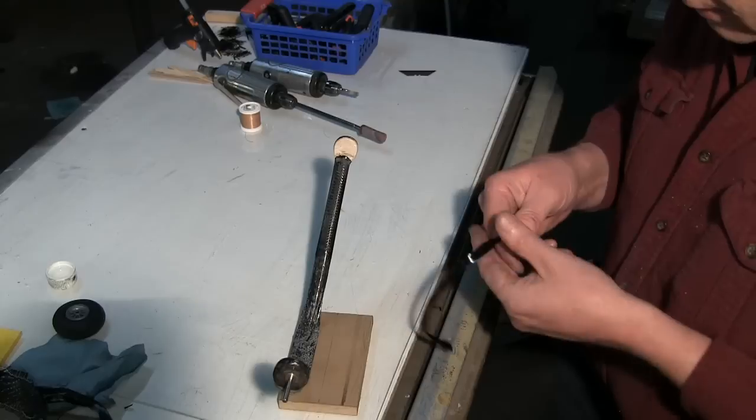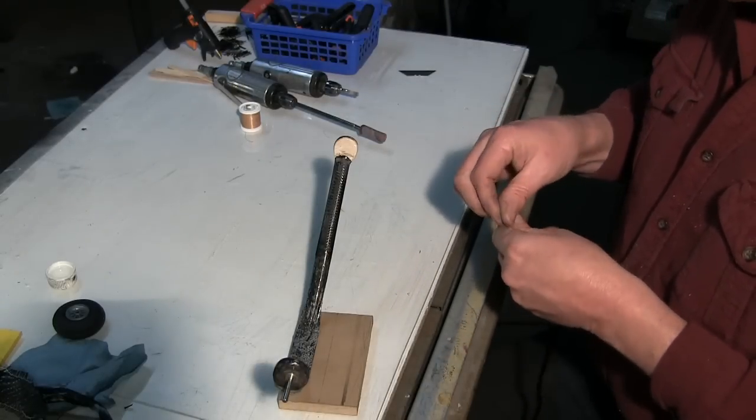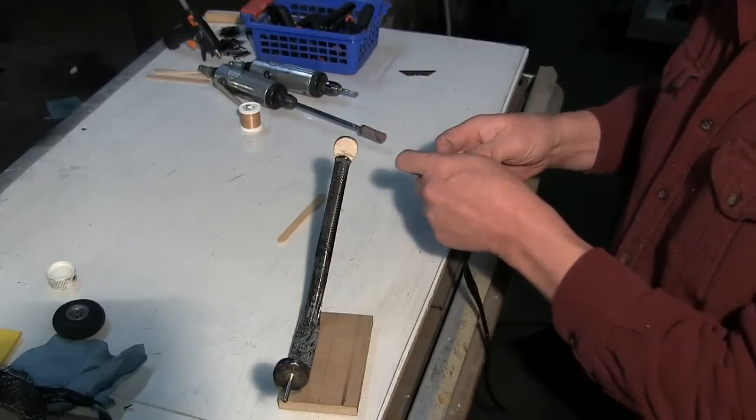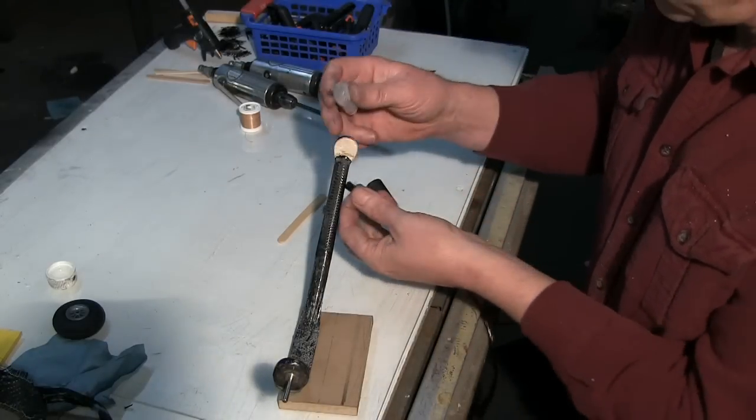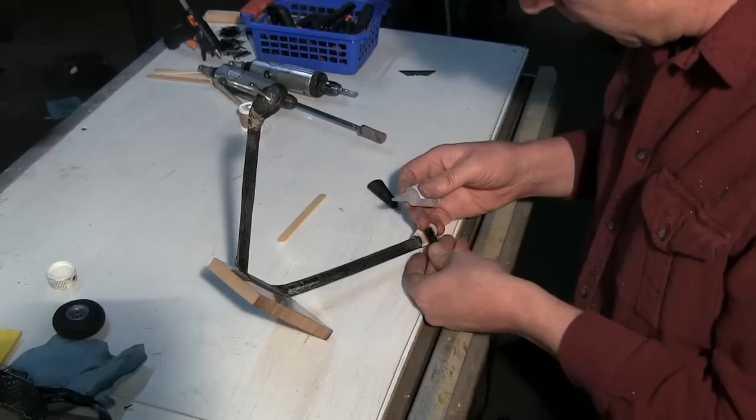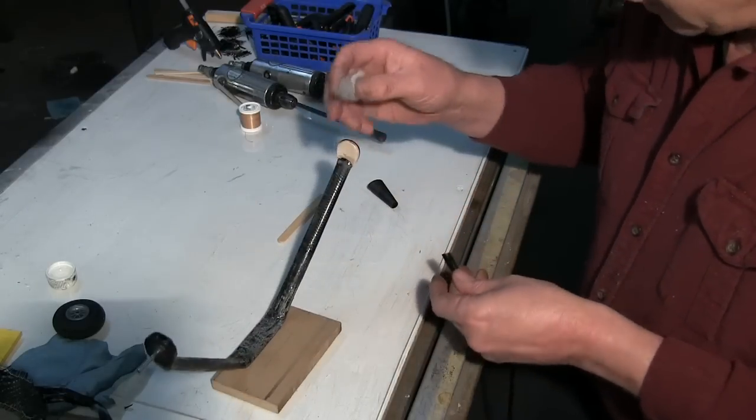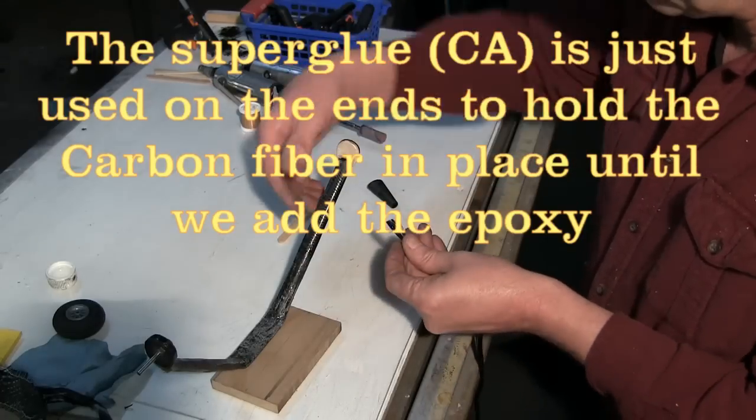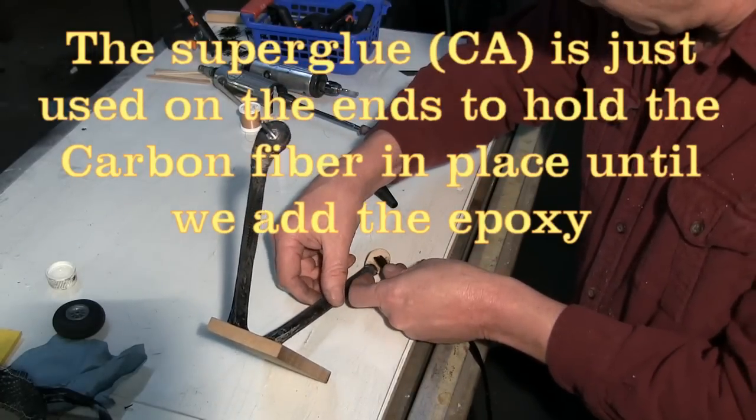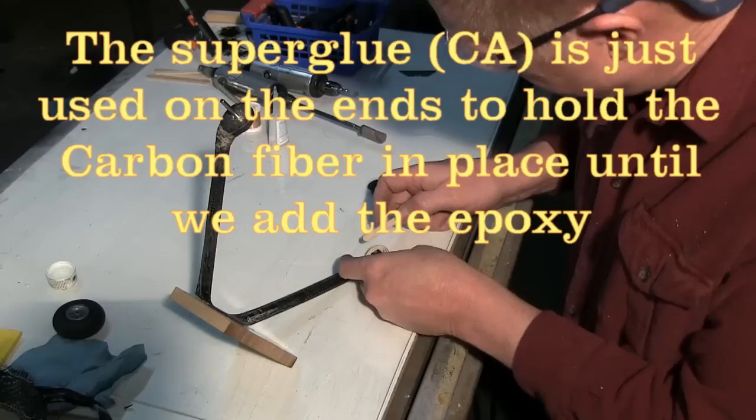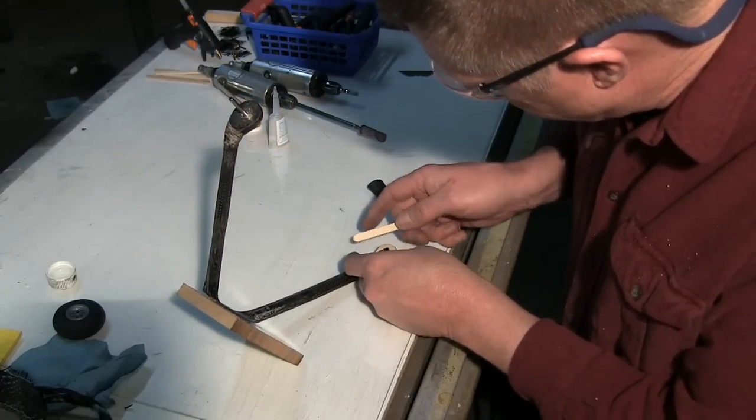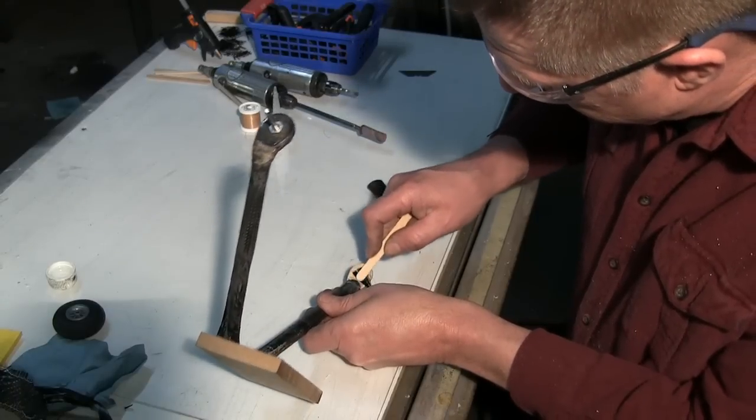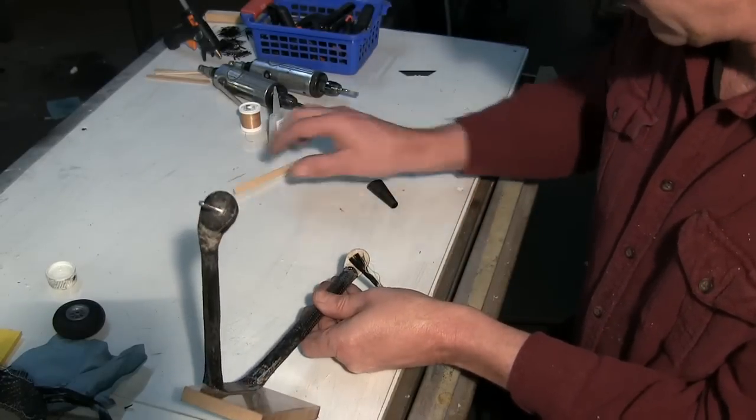So now let's get started and put some more material on this side here. The first thing I'm going to do is I've taken some unidirectional carbon fiber. I'm just going to take a little bit of super glue. I'm basically going to put a little bit of super glue on the end of this.